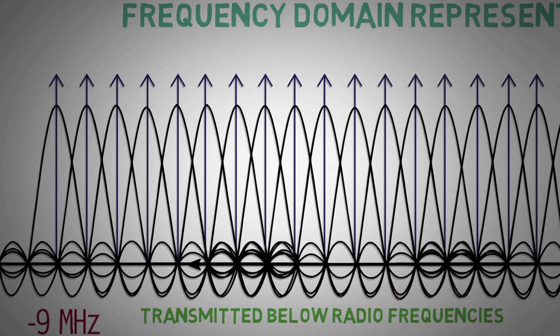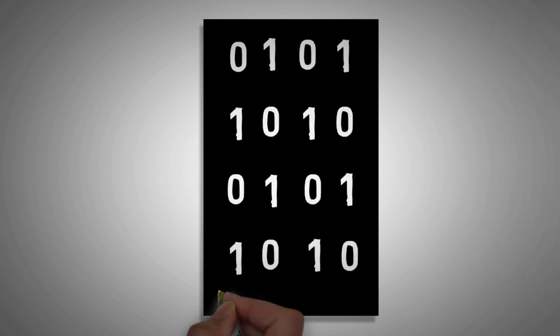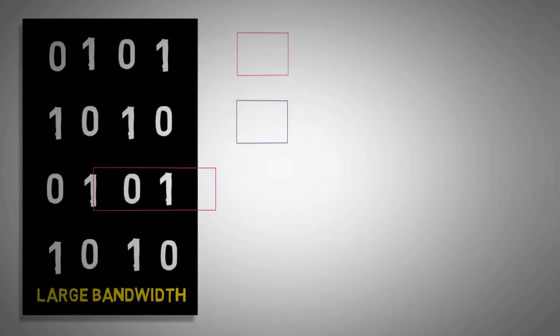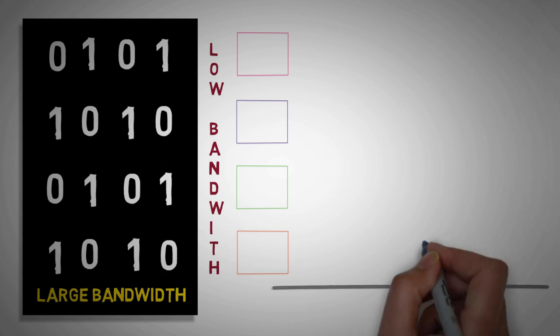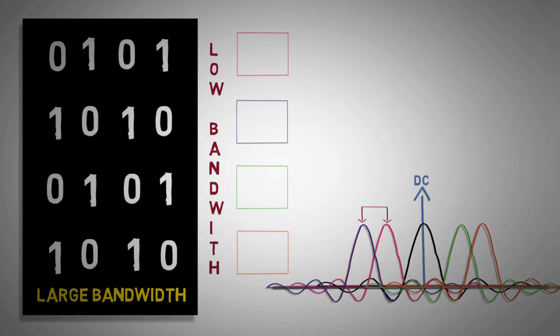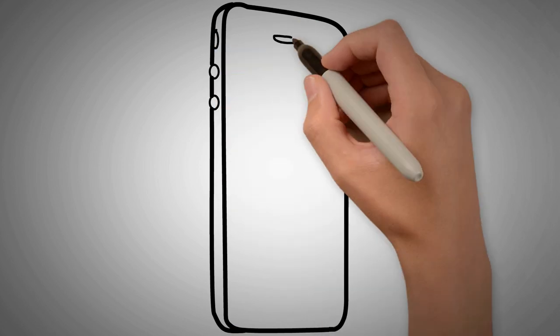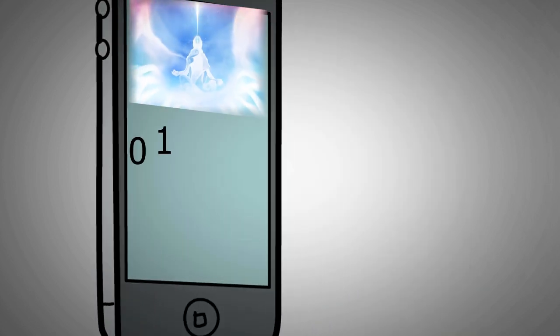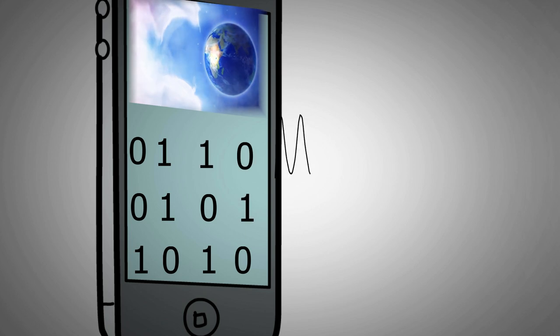So friends, today we learned how information is split into smaller sub-carriers in multi-carrier modulation and how efficiency was increased by placing them orthogonally. In our next video we will show how data starts its journey as a stream of bits and are finally transmitted as radio signal.